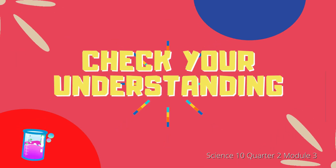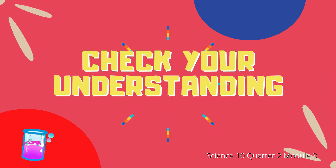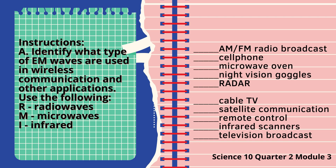This time, Grade 10, we are going to answer the Check Your Understanding part of this video module. Are you ready? Instructions: Identify what type of EM waves are used in wireless communications and other applications. Use the following letters: R for Radio waves, M for Microwaves, I for Infrared.